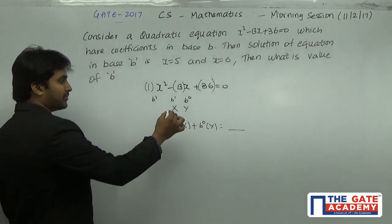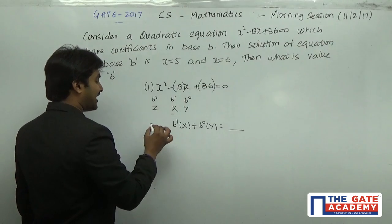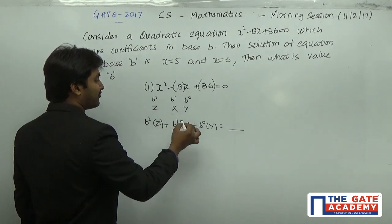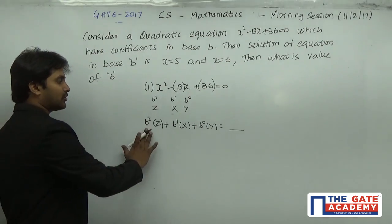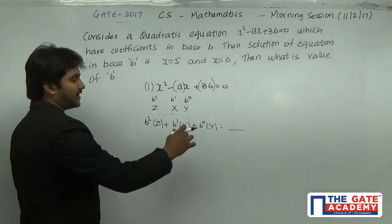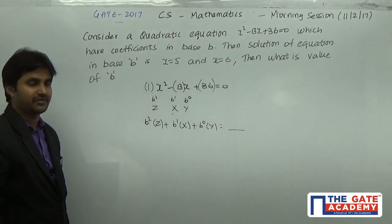Okay, if you have a number xy or if I have a bigger number, probably this is z, now I have B² × z + B¹ × x + B⁰ × y. This is how we are going to write our particular number if it is of base B, and ultimately you can write it in the form of decimal because we can understand decimal very simply.